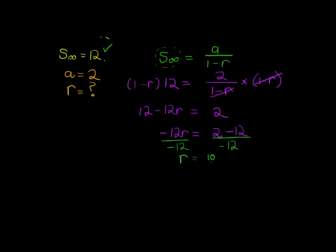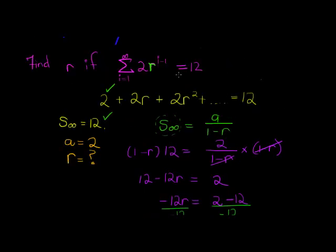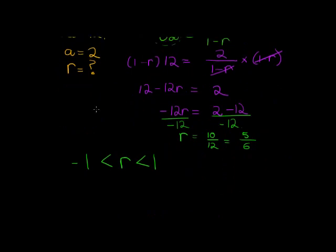And there, do you see that R is less than 1 and bigger than negative 1. It must be because this sequence converges. Because summing to infinity we actually get an answer. It converges, which means that R must be some value less than 1 but bigger than negative 1.